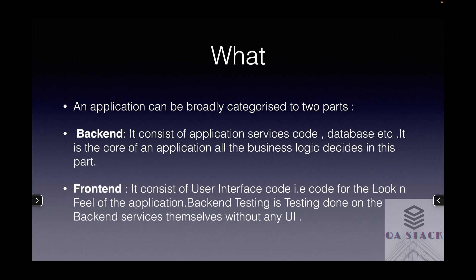The second part is of course the front-end — the UI, the look and feel of the application. For example, if you use an app, what you see — its icons, everything — this is part of the UI. Now, the back-end and front-end interact with each other via services or APIs, and this is what an application as a whole consists of.